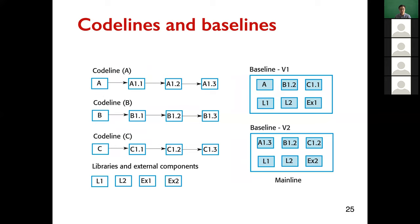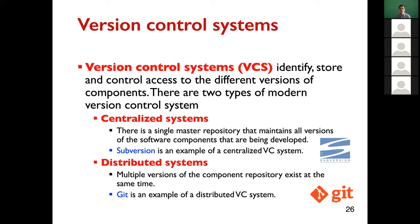Here we see examples of code lines and baselines put together. On the left are the code lines for individual components; on the right are the baselines for the whole system. The code lines are for individual components, while the baselines are for the whole system.